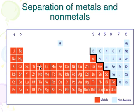Let's talk about the properties of metals. Things like: they're shiny, they conduct electricity very well, and they're malleable — in other words, you can bend them easily. On the other hand, to the right of the stair step are non-metals.